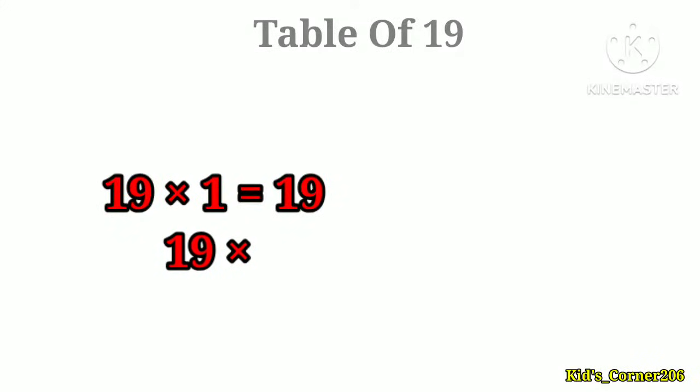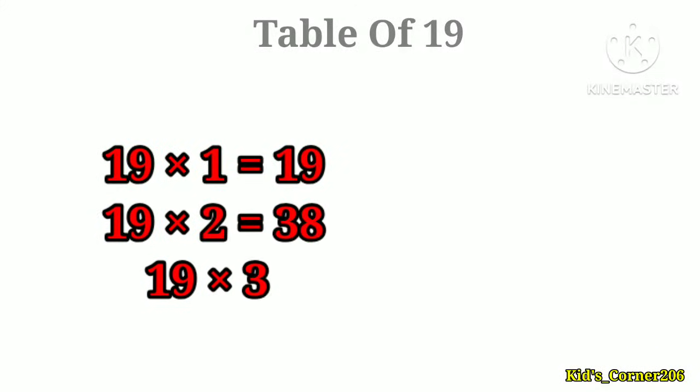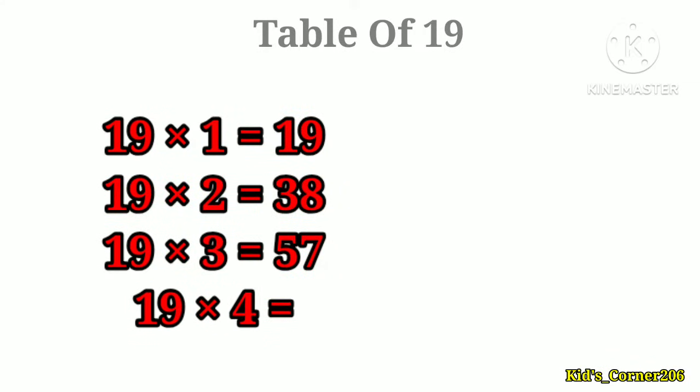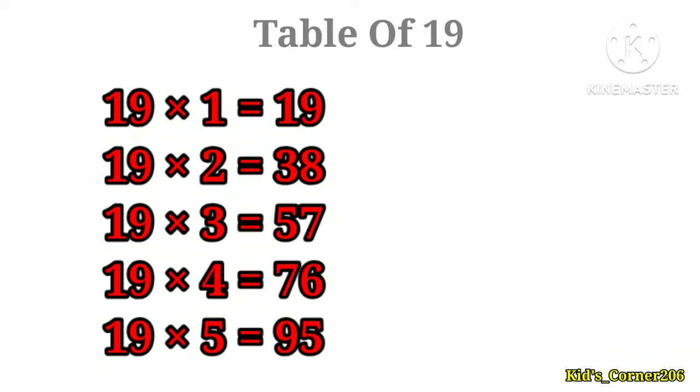Table of 19. 19 ones are 19, 19 twos are 38, 19 threes are 57, 19 fours are 76, 19 fives are 95.